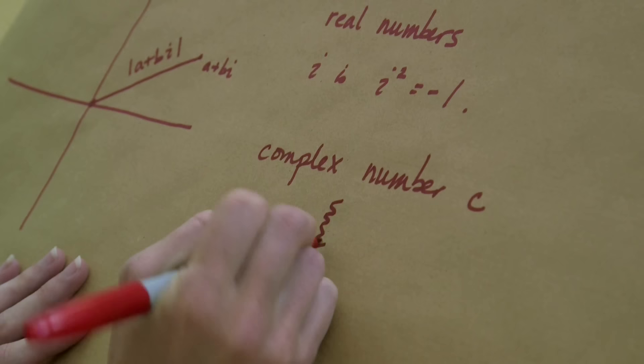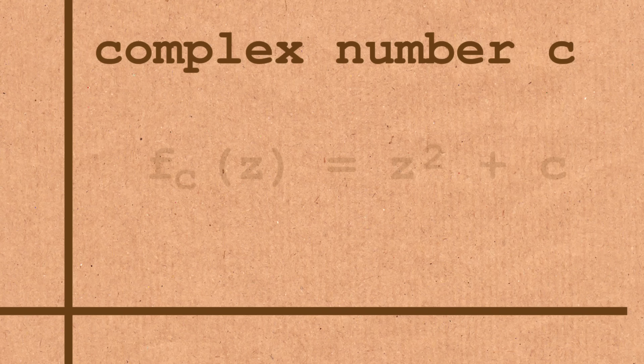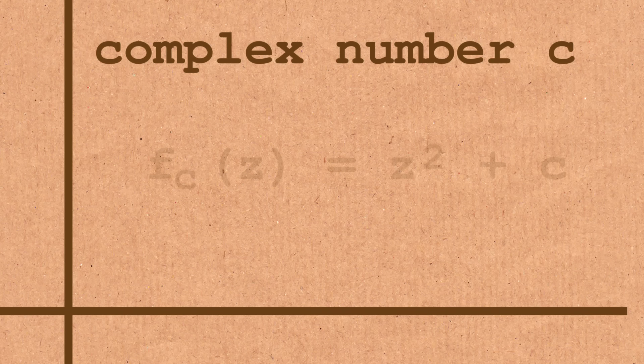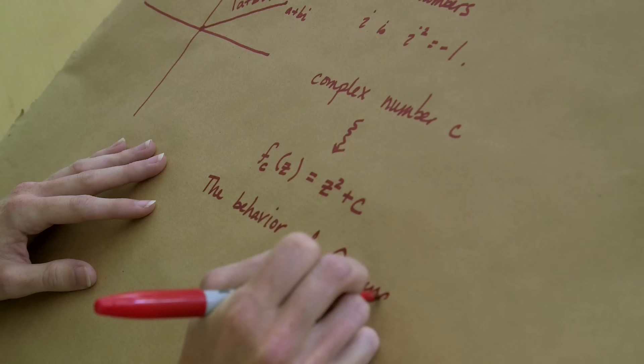So how do we get to the Mandelbrot set from here? Here's the naive definition. Let's take a complex number C and associate to this complex number the following function. This is a function which takes as an input some complex number z and outputs z squared plus C. I'm thinking of this complex number as being associated to this function.